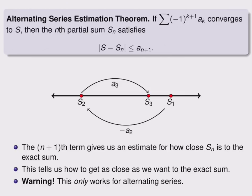The alternating series test leads us to the alternating series estimation theorem. If we have an alternating series that converges to some number S, then the nth partial sum, s_n, satisfies this inequality.